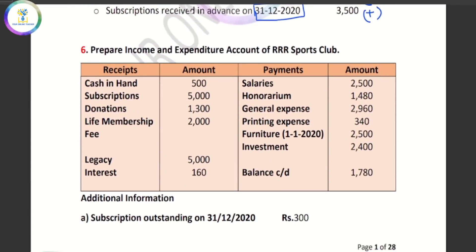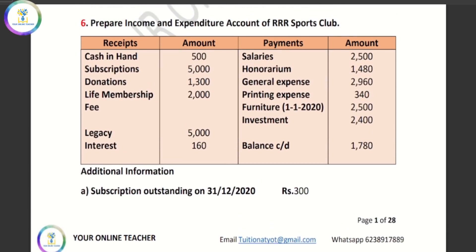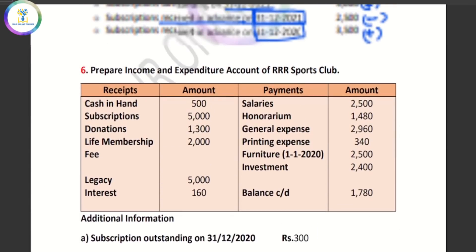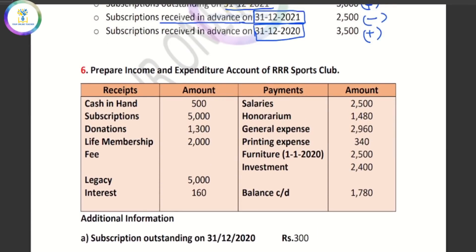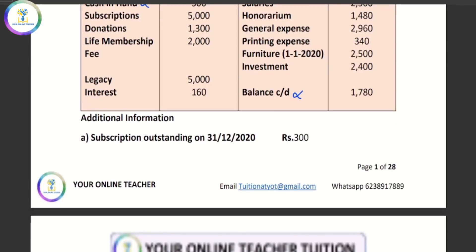Prepare the Income and Expenditure Account of RRR Sports Club with adjustments. The adjustments are: subscription outstanding is 300, salary outstanding is 330, investments earn interest, legacy and life membership are to be capitalized. Capitalized means they go to the balance sheet. We charge depreciation on furniture. The opening and closing balances are not shown in Income and Expenditure. Subscriptions require year-by-year adjustments.